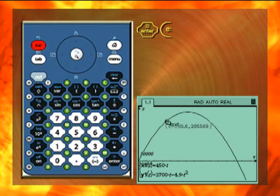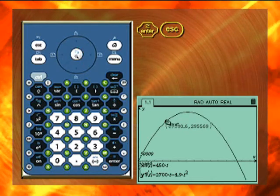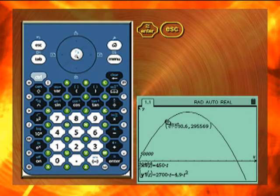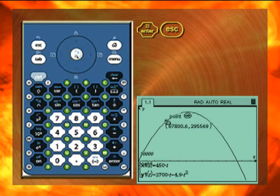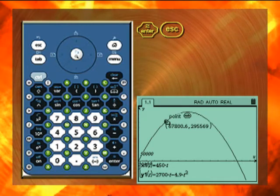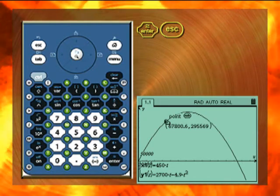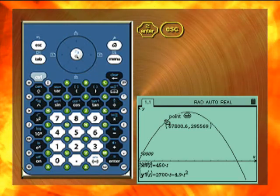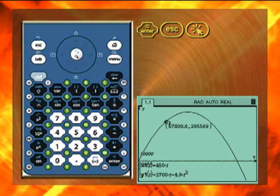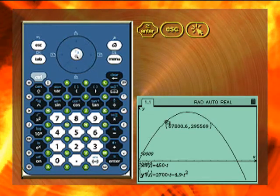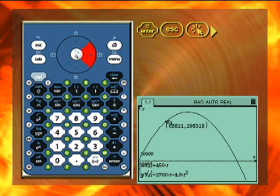Notice that a point is on the parabola with the coordinates displayed. Now make sure the pointer is above the point. The pointer should change to an open hand. Press and hold the click key until the pointer changes to a closed hand. Use the right arrow to move the point along the graph. Notice how the coordinates change.